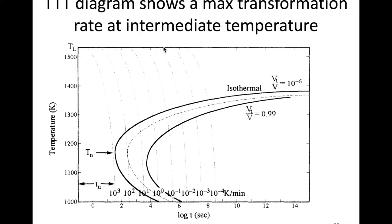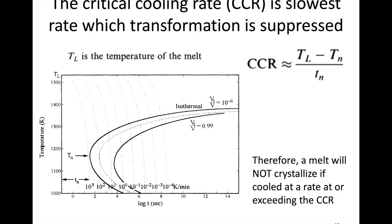We want to be able to use this diagram to find the critical cooling rate, CCR, because this is the slowest rate at which the transformation can be suppressed. We want to find the slowest rate from the temperature we start to the temperature we cool down to, to avoid this transformation.